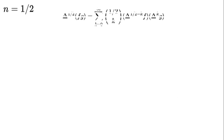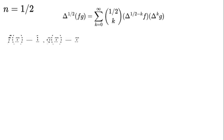Delta to the power of 1 over 2 times (f times g) equals the sum from k equals 0 to infinity of (1 over 2 choose k) times delta to the power of (1 over 2 minus k) times f times delta to the power of k times g. Let's compute the half derivative of x using f(x) equals 1, g(x) equals x.